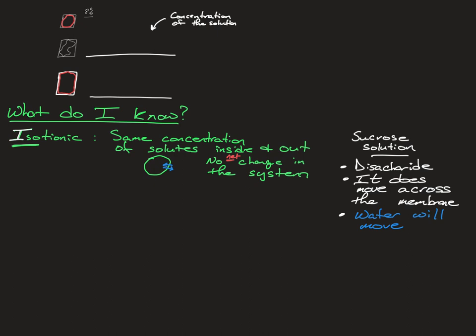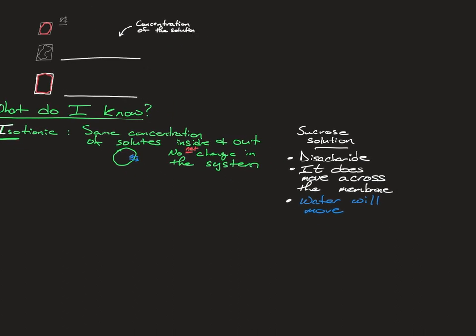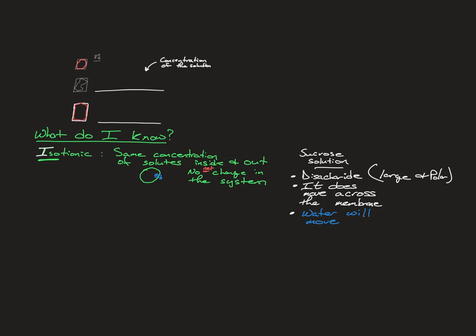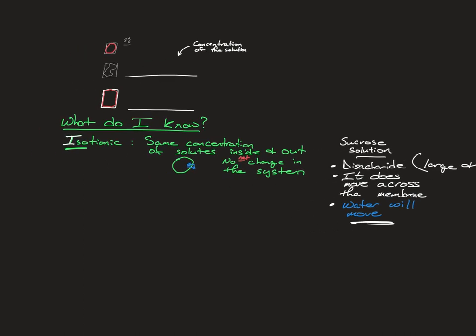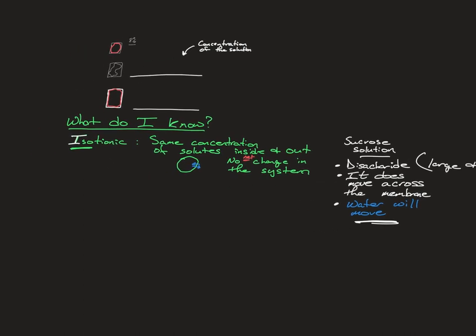And maybe you should know at this point that disaccharide means it's large and polar. So that's not moving across the membrane without help. And this membrane doesn't have that help. So it's not moving. So that means that water is going to move from its high to its low. But I know in an isotonic solution, I know that water is going to be moving in both directions equally.